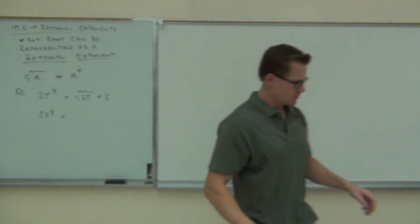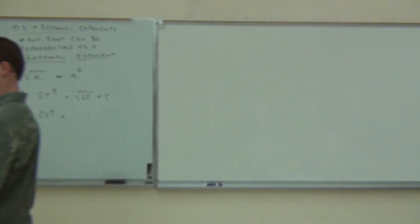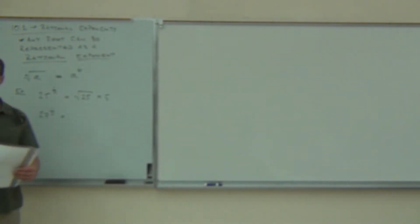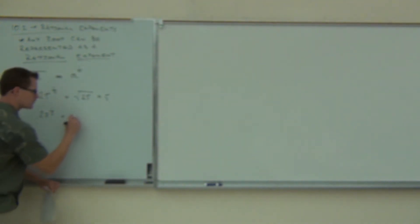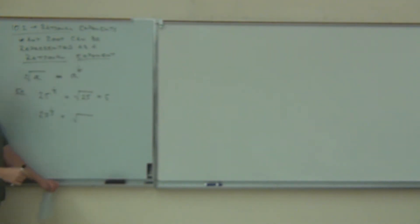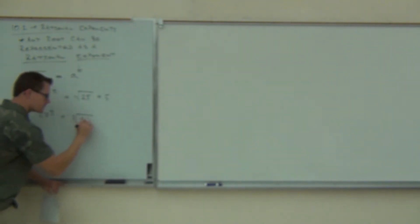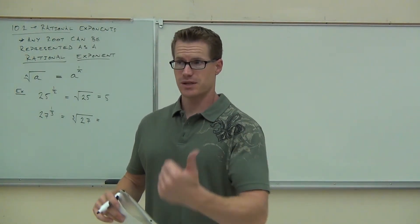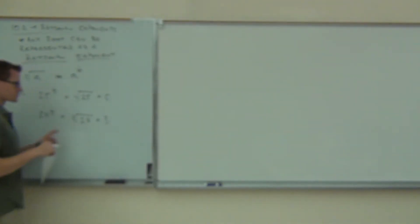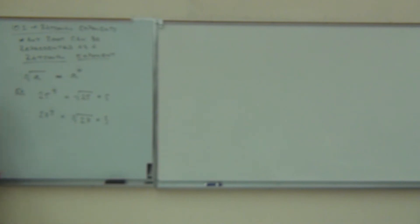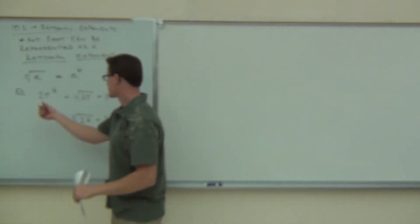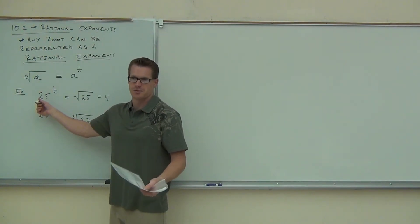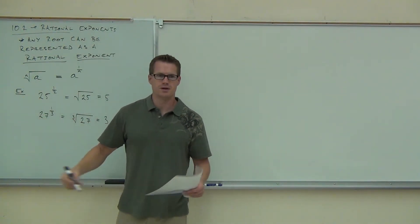Let's try 27 to the one-third. What type of root does this suggest? The denominator — the three — tells you it's a cube root. So we have a radical with a cube root, and 27 is on the inside. What is the cube root of 27? Three, because three times three times three equals 27. You'll get pretty good at this — you'll immediately see 25 to the one-half and know it's five, or 27 to the one-third and know it's three.